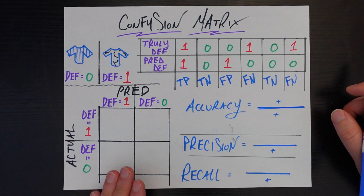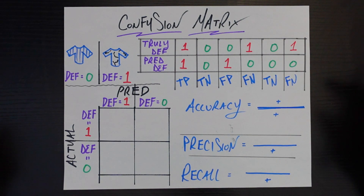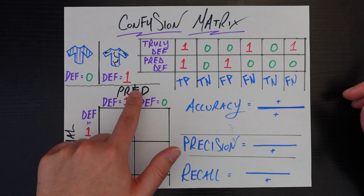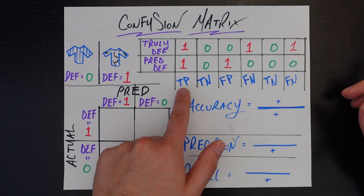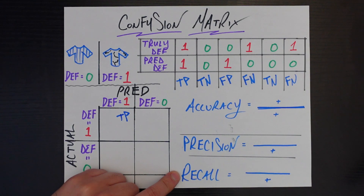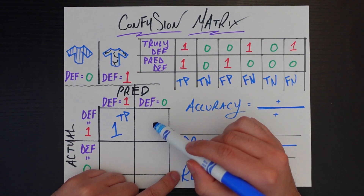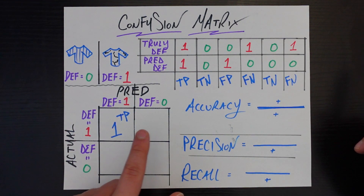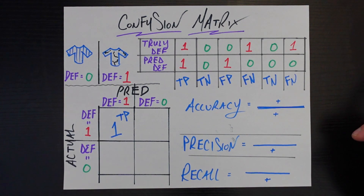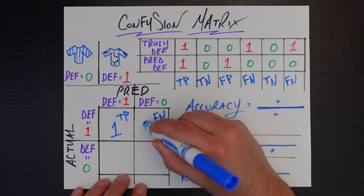Now we build up the confusion matrix itself, and the confusion matrix is basically just this 2x2 matrix with these four cells, and inside each cell we just put the count of the number of each case. So let's break down these cells one by one. The top left cell says that the predicted class was defective and the actual class was defective, which we know are called true positives. So we're counting up all the true positives in our data set. Looking at these six examples, there's just one such example, so this is equal to 1. Now the second box — here we're saying the predicted class is 0, so our model said this is not defective, but the actual class is 1, it is defective. And so we falsely put these in the negative class, aka false negatives, and we see there's two of those, so we put two here.